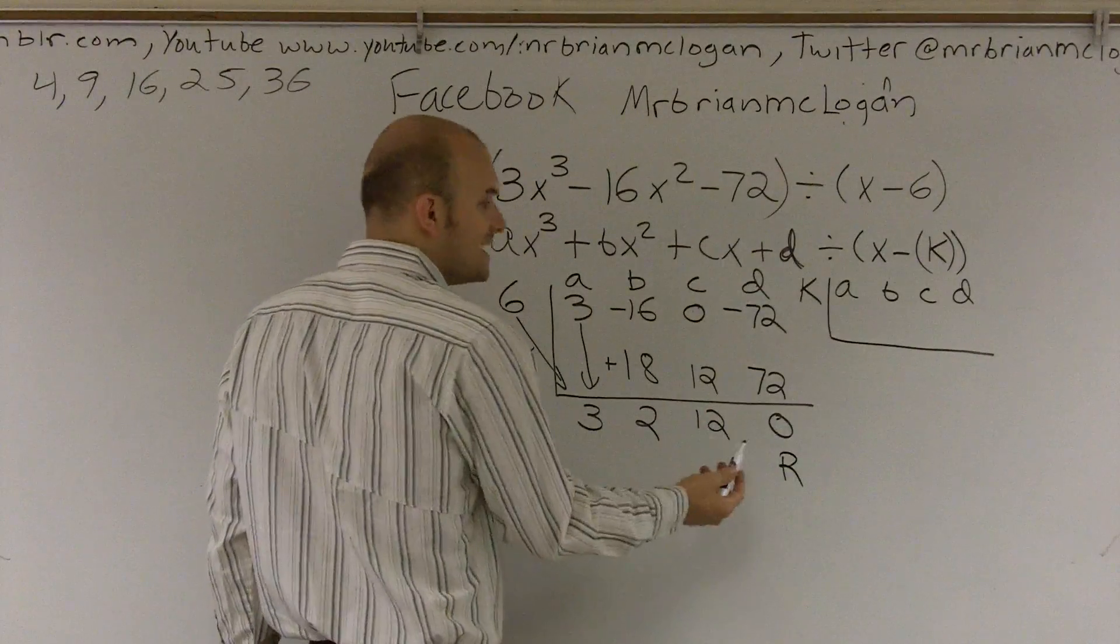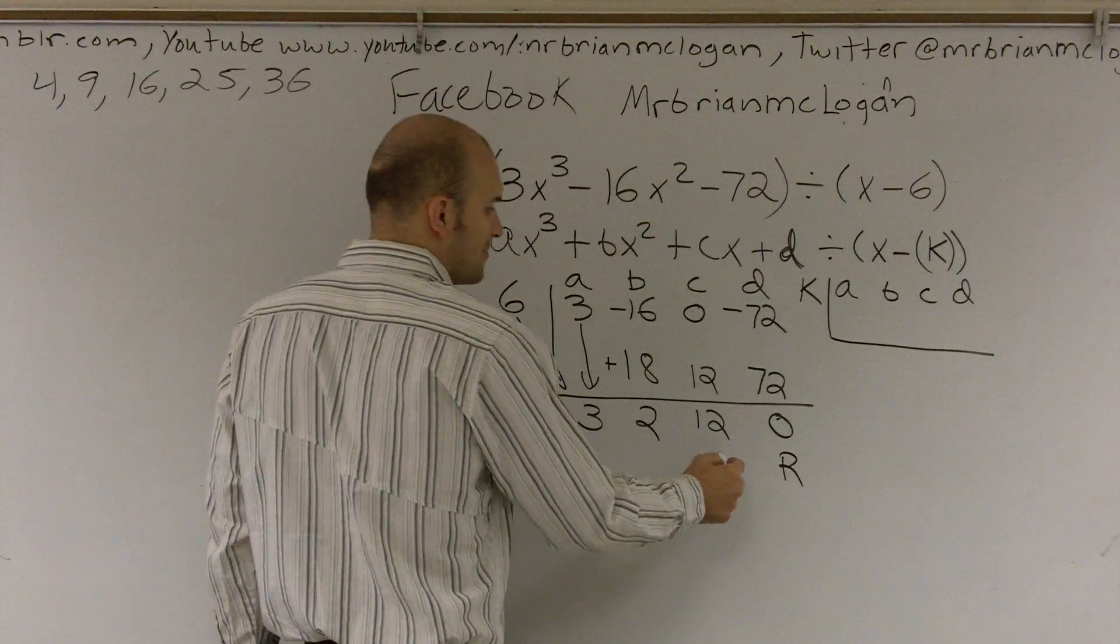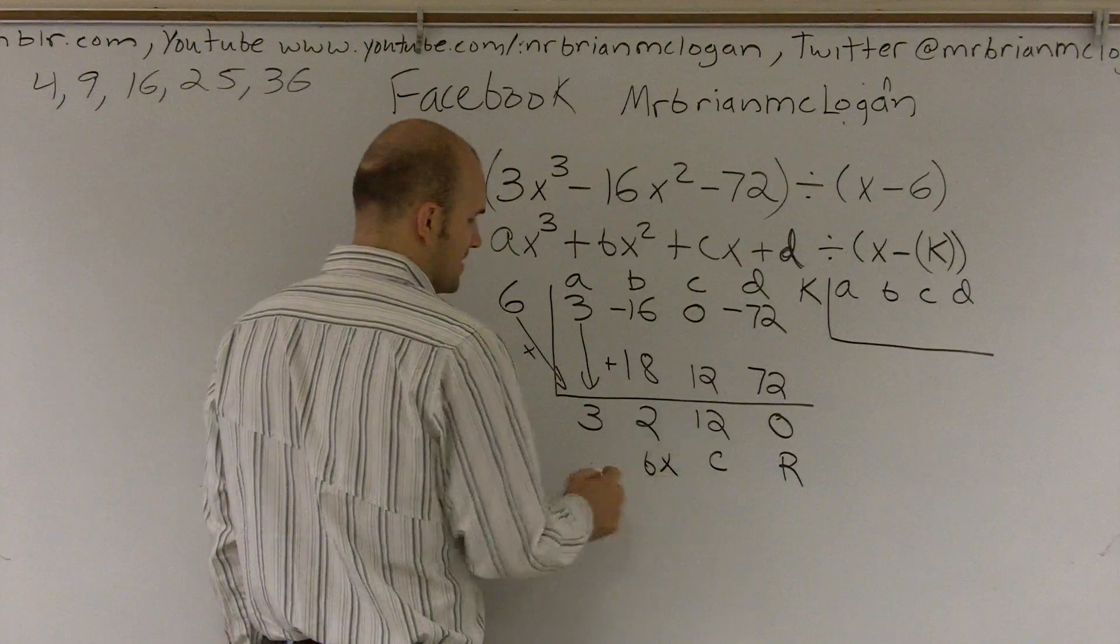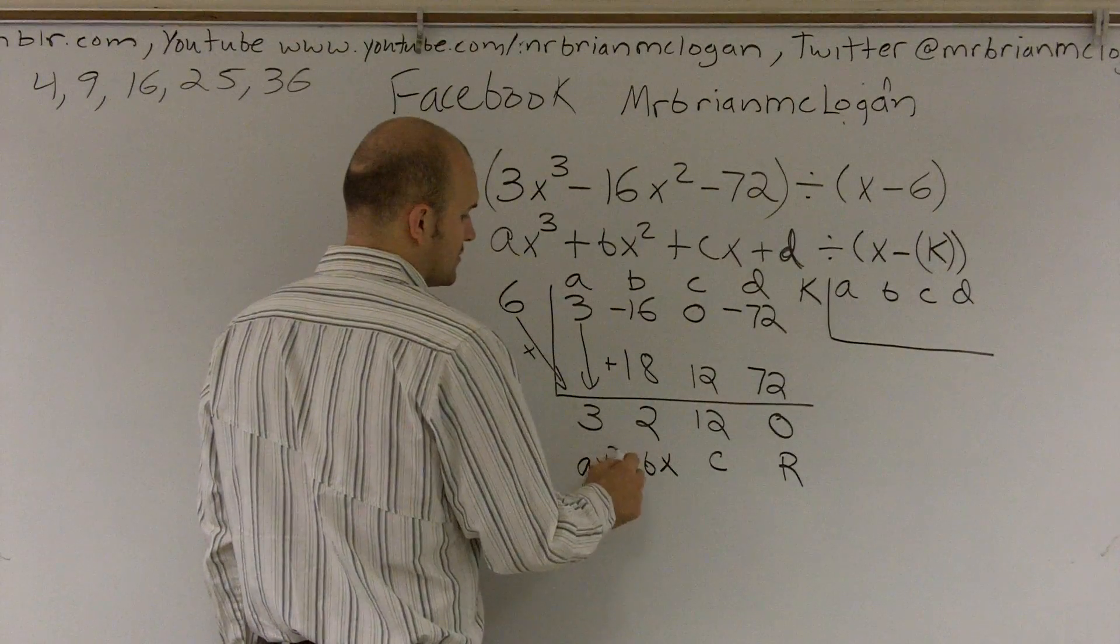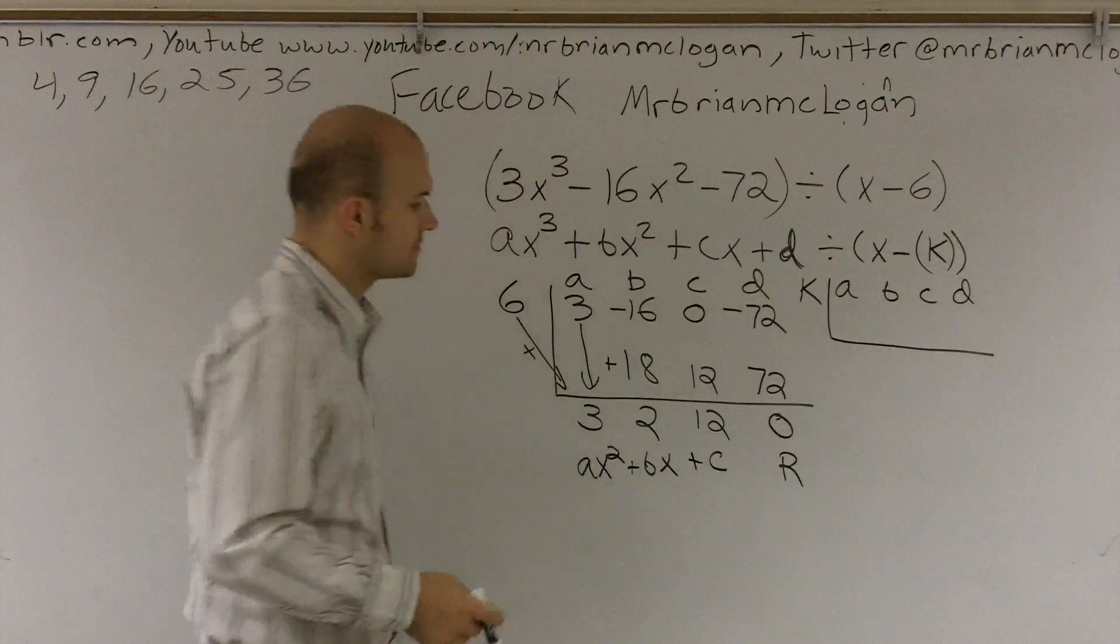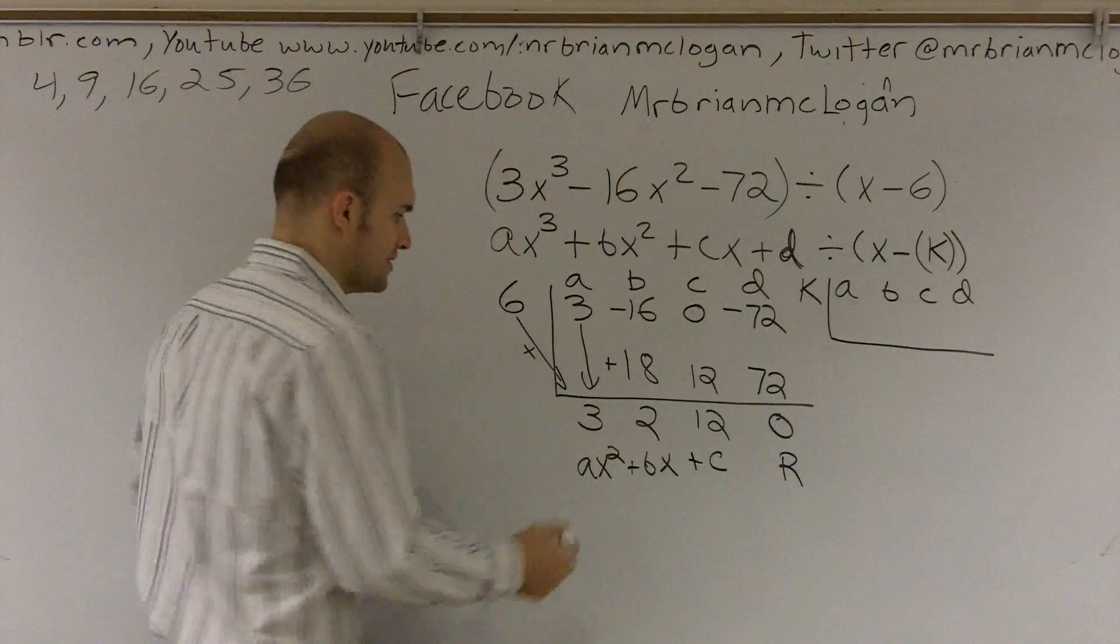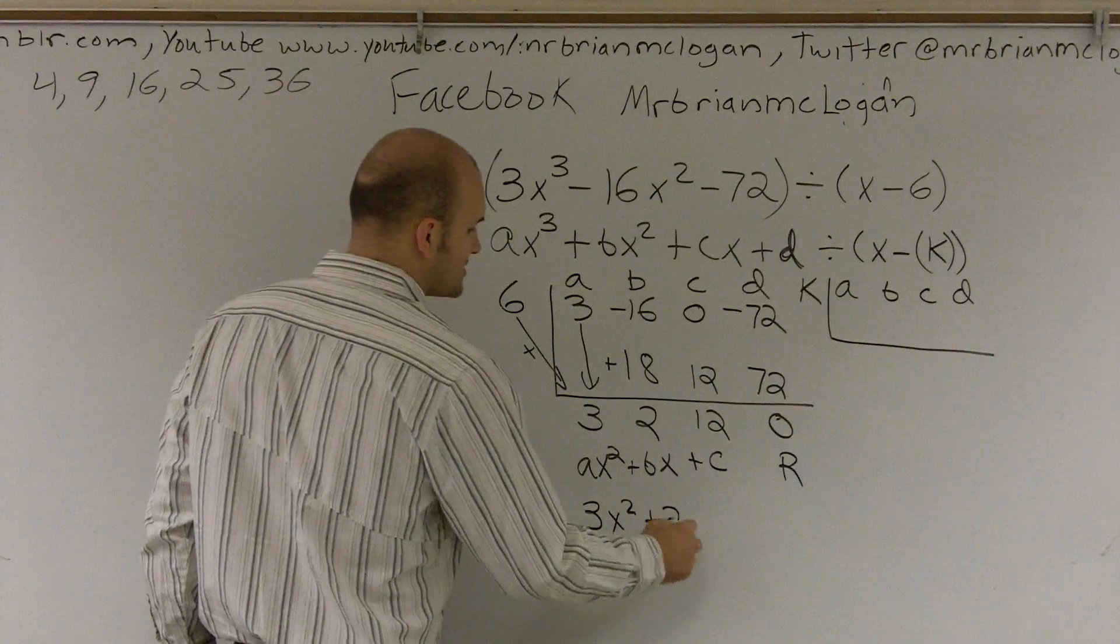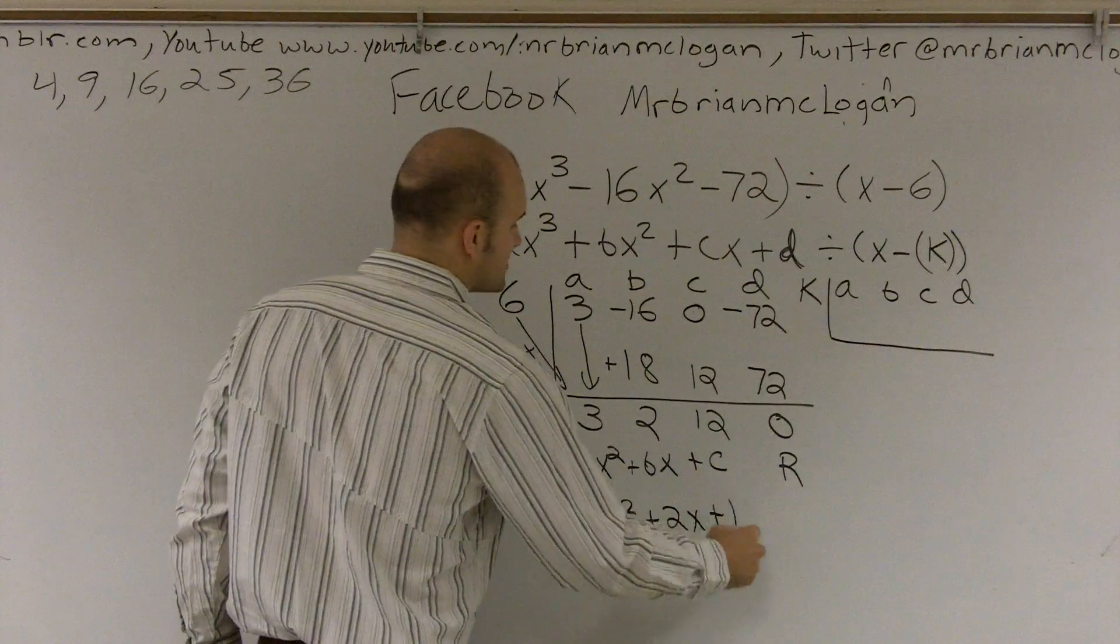So the next term is going to be your constant, which in this form is going to be c. This is going to be my bx. And this would be my ax². And fortunately, these are all positives. So what you can write is 3x² plus 2x plus 12.